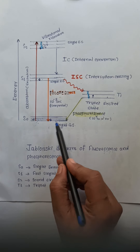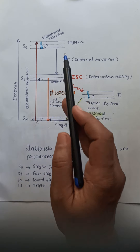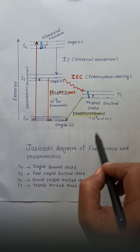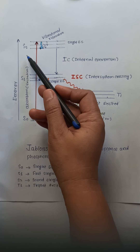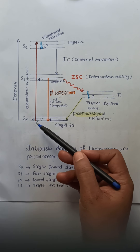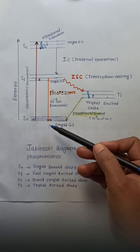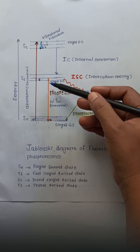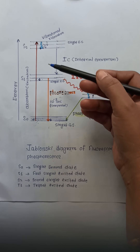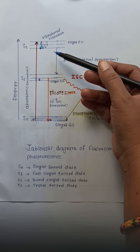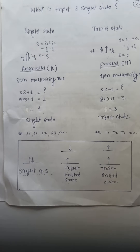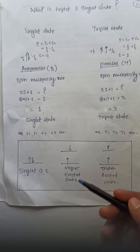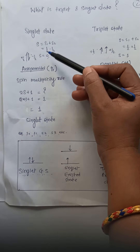The diagram is grouped horizontally by spin multiplicity. In this diagram we can see the different states: S0, S1, S2, and T1. S0 is the singlet ground state, S1 is the first singlet excited state, S2 is the second singlet excited state, and T1 is the triplet excited state. Now, what is a singlet and triplet state?